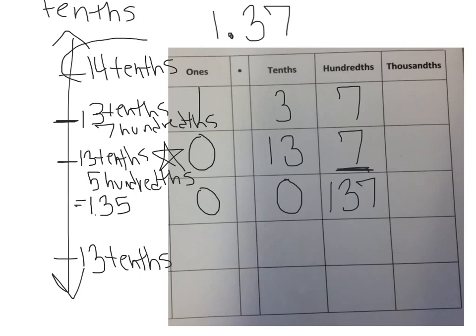So, 1 and 37 hundredths rounded to the nearest tenth is 14 tenths. And if we wanted to write that out, 14 tenths, I always like to bring it back. 14 tenths, we know that 10 tenths is equal to 1 whole. So I'm going to write that as 1 whole and 4 leftover tenths. So I'm going to see that as 1 and 4 tenths.